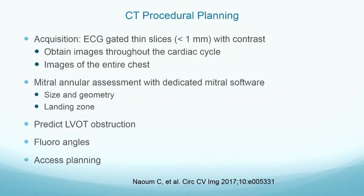When we do CT procedural planning, an important thing which you may not think about is how do we acquire the data? Because if you don't have the data acquired properly, you're not going to be able to analyze it properly. We look at images throughout the cardiac cycle — that's important — and you want the whole chest too, so we can look at access.